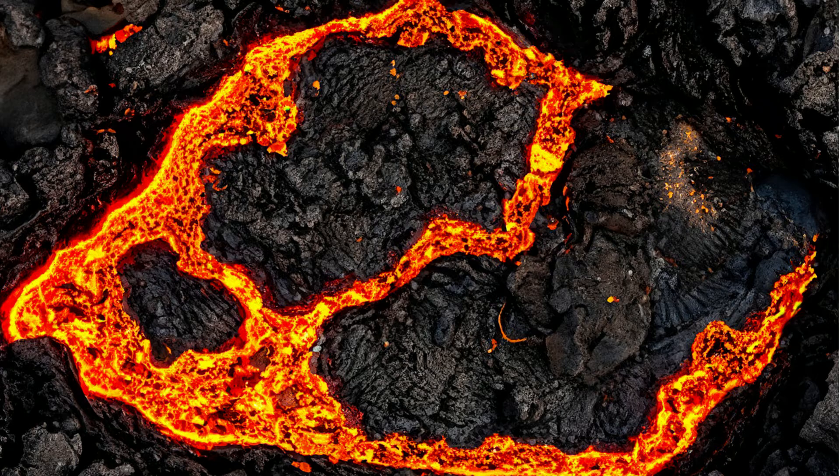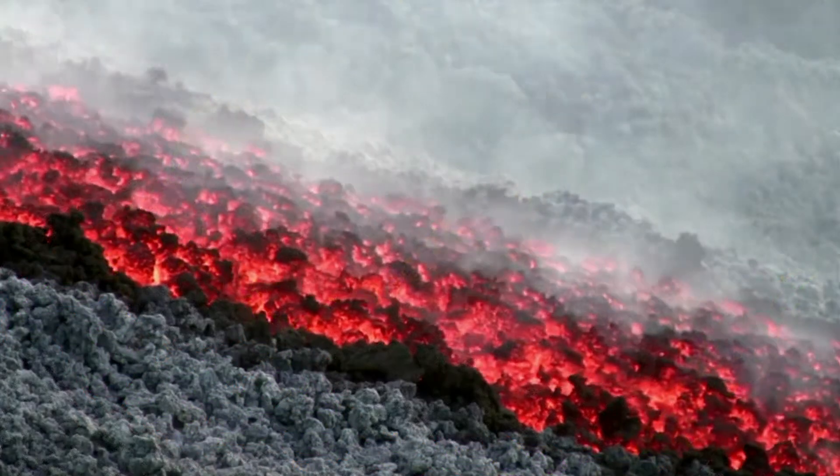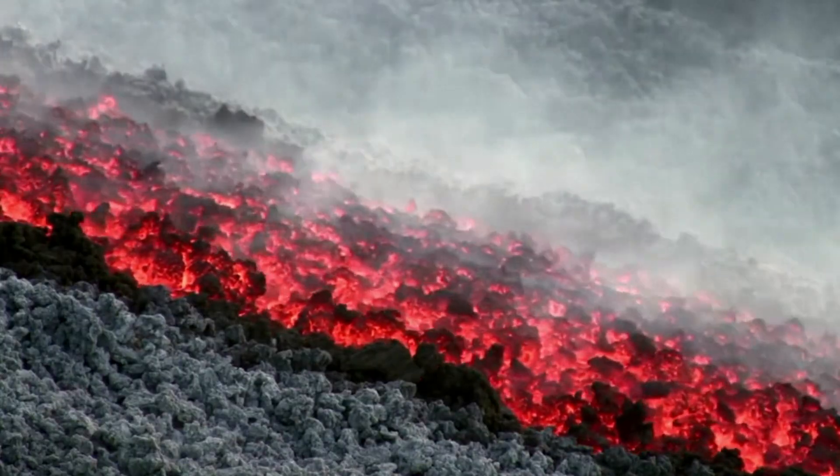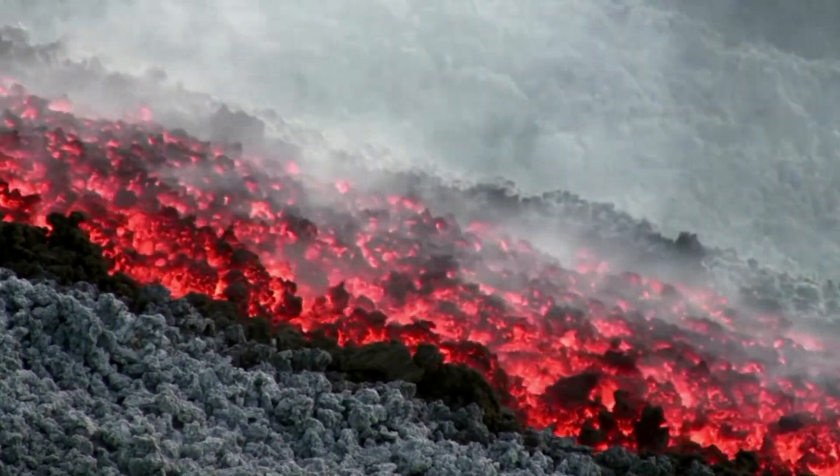Igneous rocks may form from magma, which is found inside the earth and cools slowly, or lava, which is molten rock on the surface of the earth and cools more quickly.